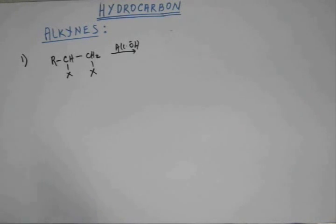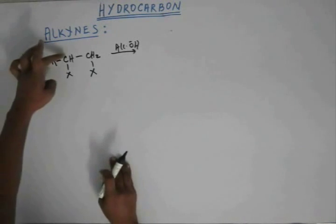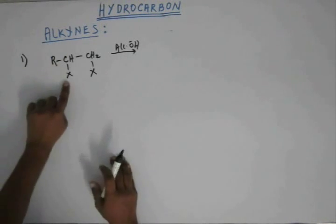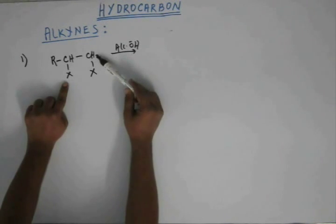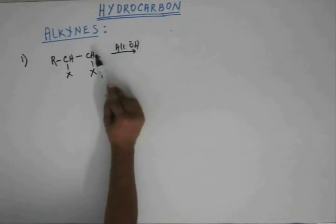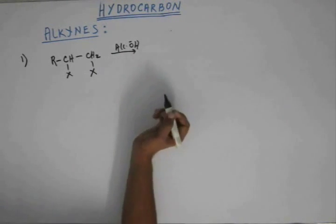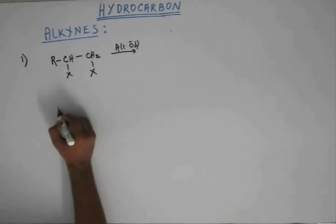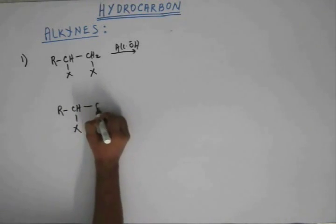There are two leaving groups — two halogens — so two eliminations are possible, and we'll carry both out one by one. This halogen will leave if we abstract a hydrogen from this carbon, and that halogen will leave if we abstract a hydrogen from the other carbon. Let's start with the terminal carbon, carbon number one, since it is on the terminal position and has less steric hindrance.